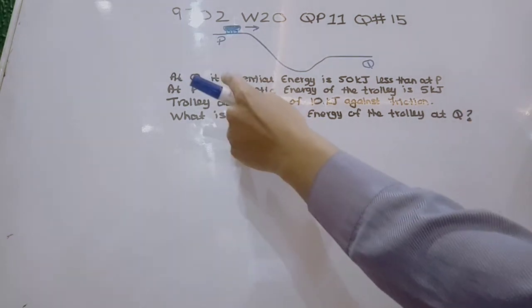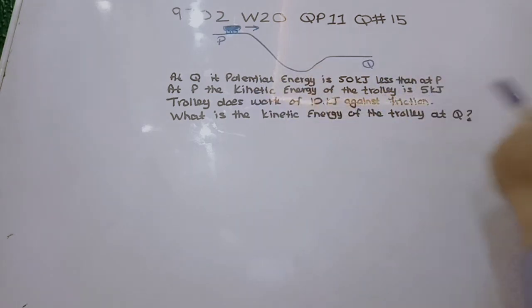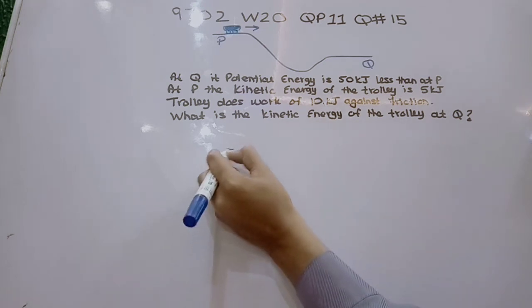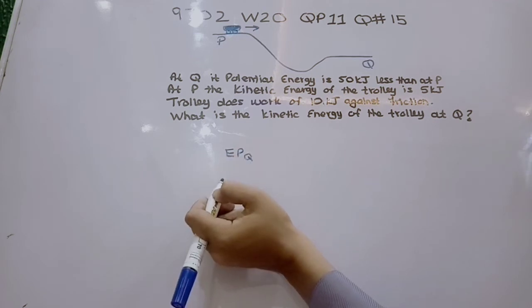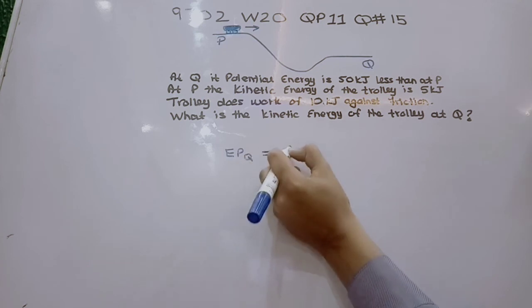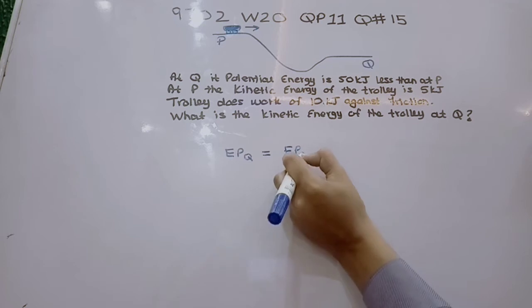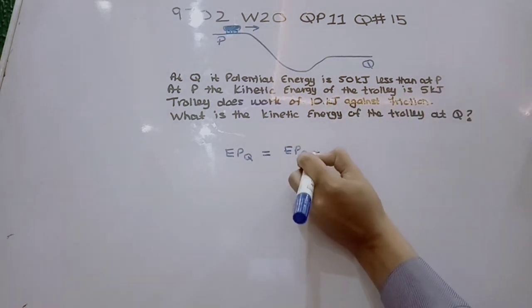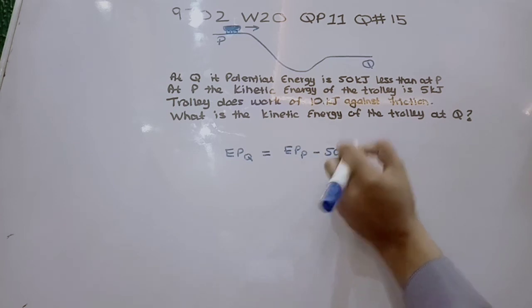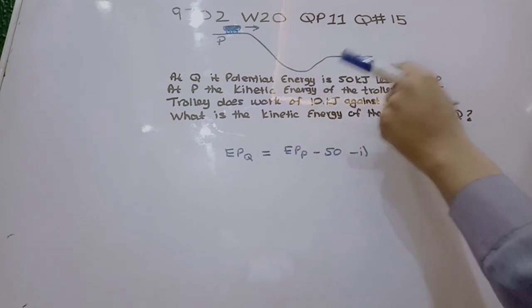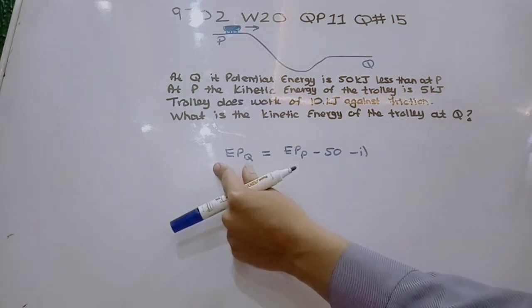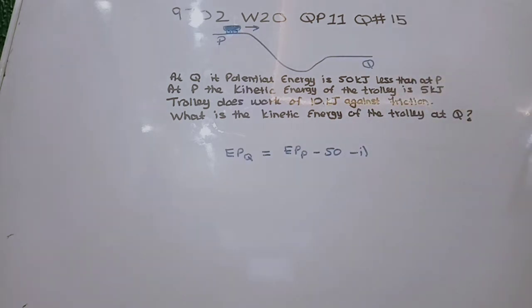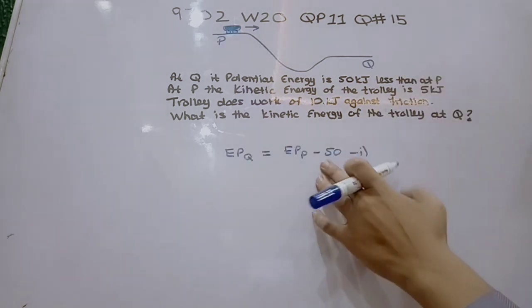It says that at Q the potential energy is 50 kJ less than at P. So we can say that potential energy at Q equals potential energy at P minus 50. This is equation one. At Q the potential energy is less because it is at a lower height, and potential energy is all about mgh — the lower the height, the lower the potential energy.